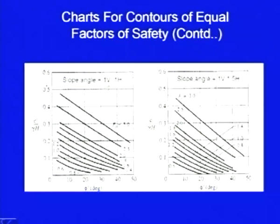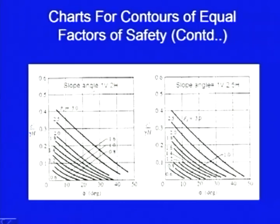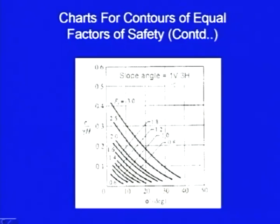So this is the next chart — it is for 1 vertical to 1 horizontal, slope angle is 45° here. Again factor of safety is 3 for this curve, this is for 2.5, 2, and so on. Here it is 1 vertical to 1.5 horizontal, and these are the factor of safety values. This chart is for 1 vertical to 2 horizontal, and this chart is for 1 vertical to 2.5 horizontal. And finally, this is the chart available for 1 vertical to 3 horizontal — a very flat slope — and this is the factor of safety curve, with x-axis φ' and y-axis c'/(γ·h).